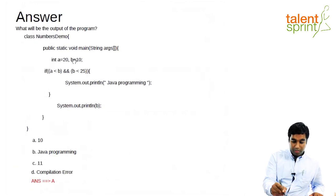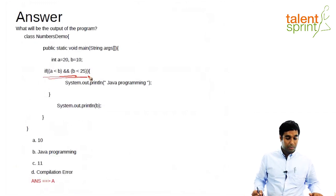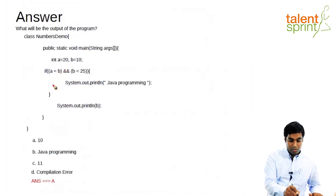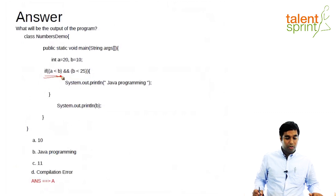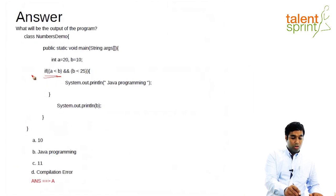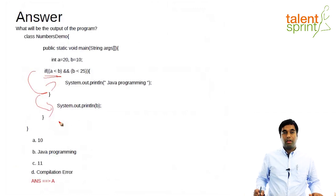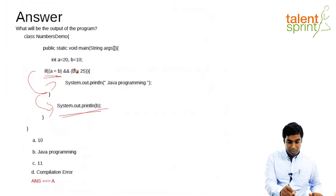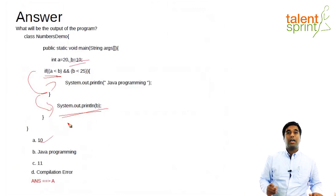In the if condition we see two conditions separated by an AND operator. The first condition is A less than B. The value of A is 20 and B is 10, so this first condition is actually false. The flow will not go into the next line — it will go to the line outside the if construct. So it is going to print the value of B, which equals 10. The correct answer is 10.